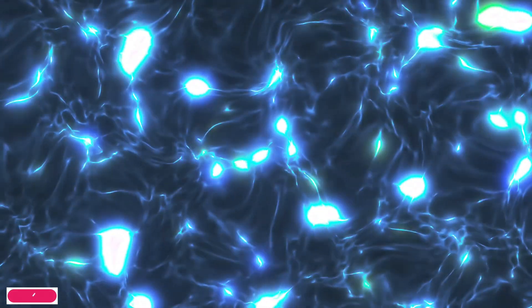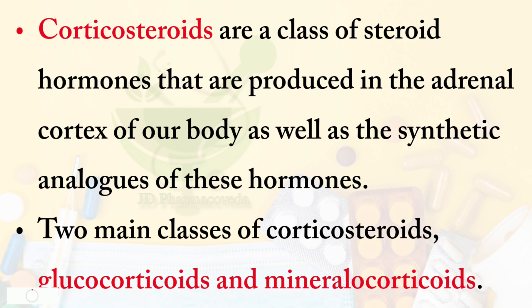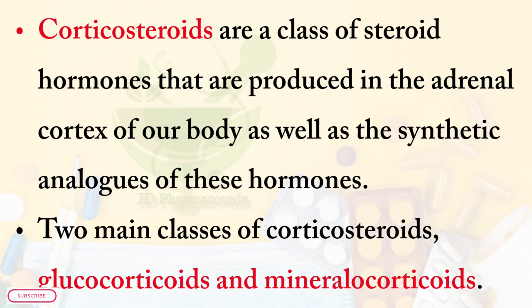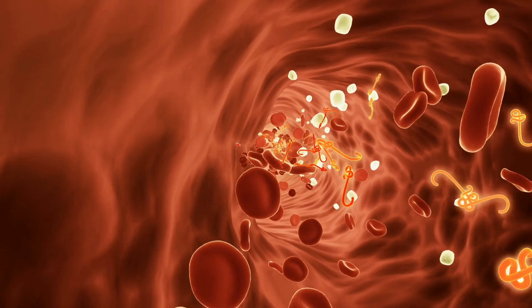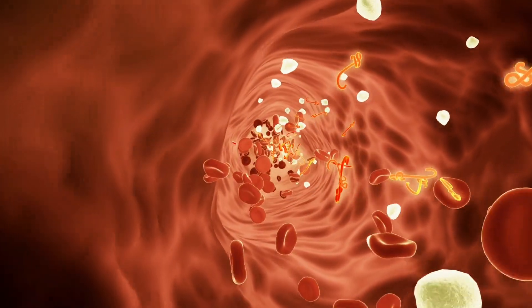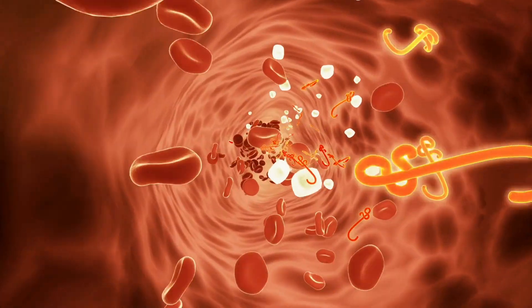Corticosteroids are a class of steroid hormones that are produced in the adrenal cortex of our body, as well as the synthetic analogues of these hormones. These hormones are steroids involved in a wide range of physiological processes including stress response, immune response, regulation of inflammation, metabolism of carbohydrates, proteins, blood electrolyte levels, and behavior.